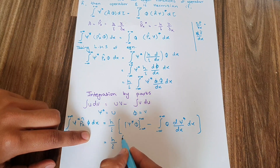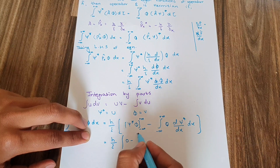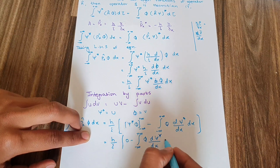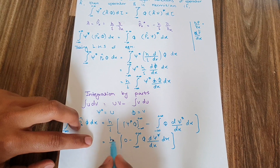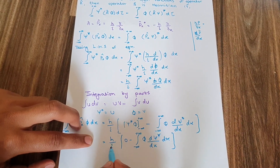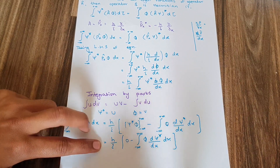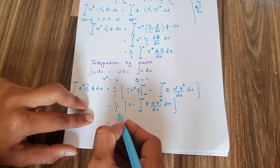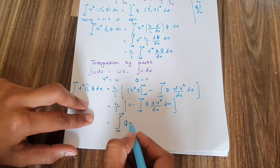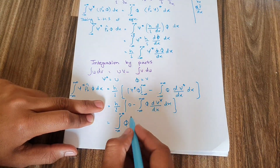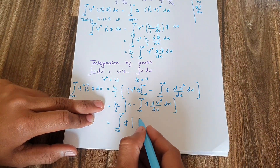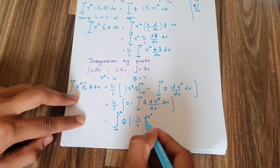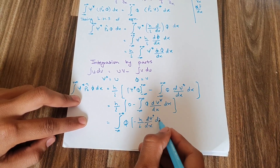So the boundary term equals zero, and the remaining equation is: (ℏ/i) times zero, minus the integral from negative infinity to positive infinity of phi times d(psi*)/dx, dx. After zero cancels, multiplying through by ℏ/i gives us the integral from negative infinity to positive infinity of phi times (ℏ/i)(d psi*/dx), dx.